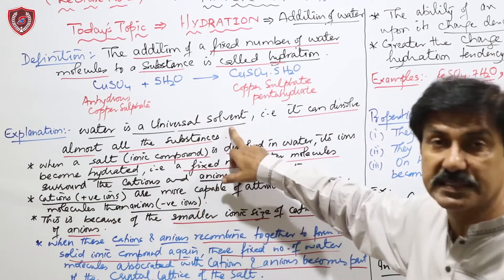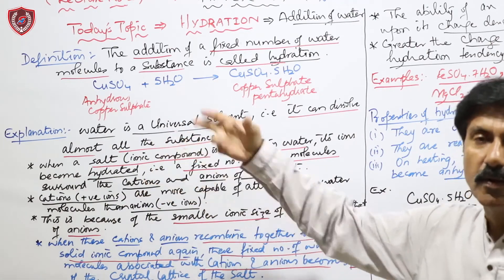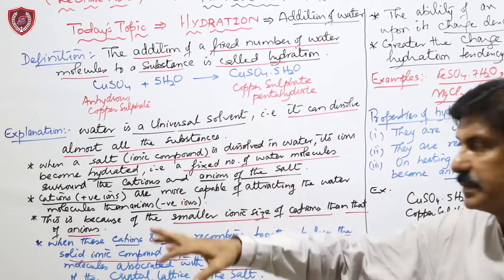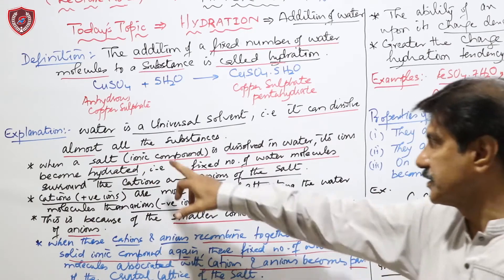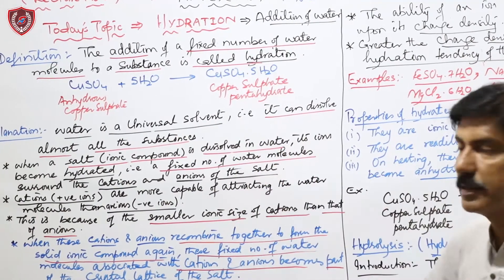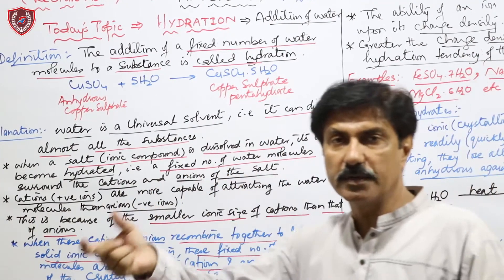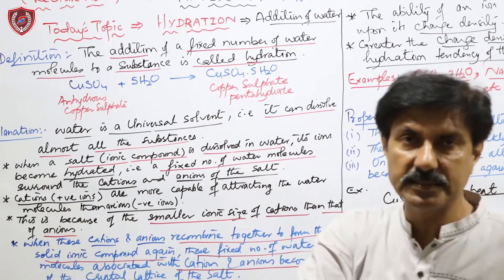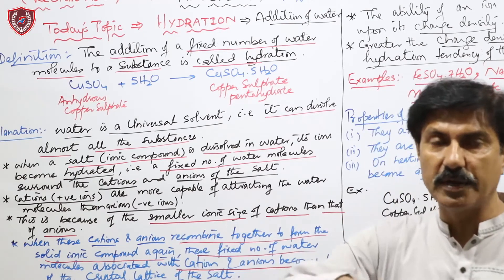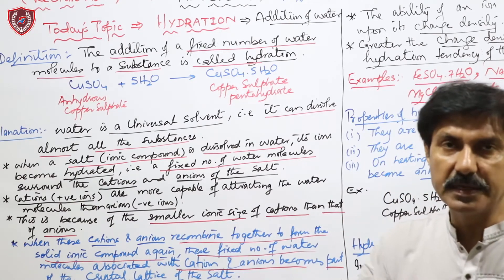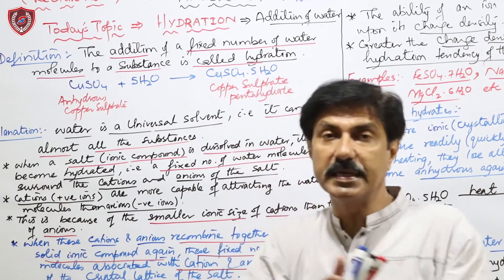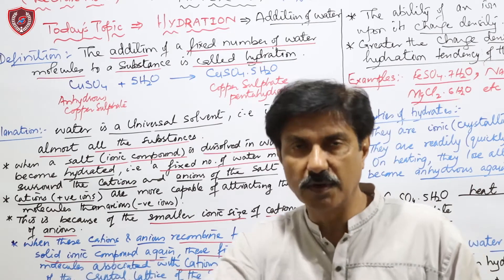Water کو universal solvent کہا جاتا ہے کیونکہ by nature یہ polar ہے اور تقریباً ہر چیز میں dissolve ہو سکتا ہے۔ جب کسی salt کو — جو ionic اور polar nature کا compound ہوتا ہے — پانی میں dissolve کرتے ہیں، تو وہ ions میں ٹوٹ جاتا ہے: cations اور anions بناتا ہے۔ یہ cations اور anions مخصوص تعداد میں water molecules سے surround ہو جاتے ہیں — اس عمل کو hydration کہتے ہیں۔ Ions become hydrated means they are being surrounded by a fixed number of water molecules۔